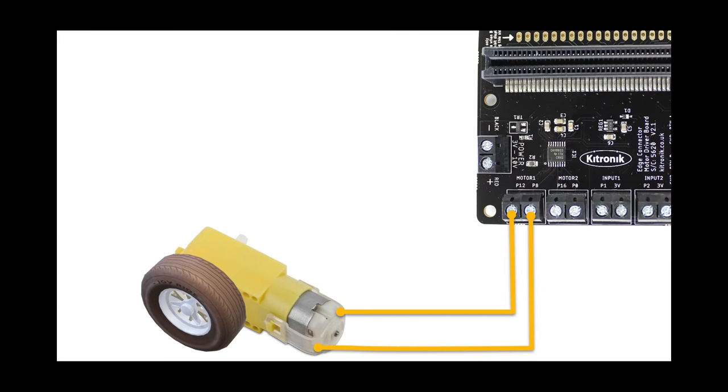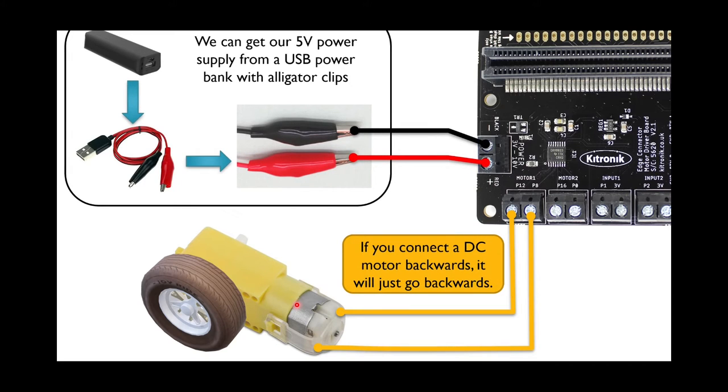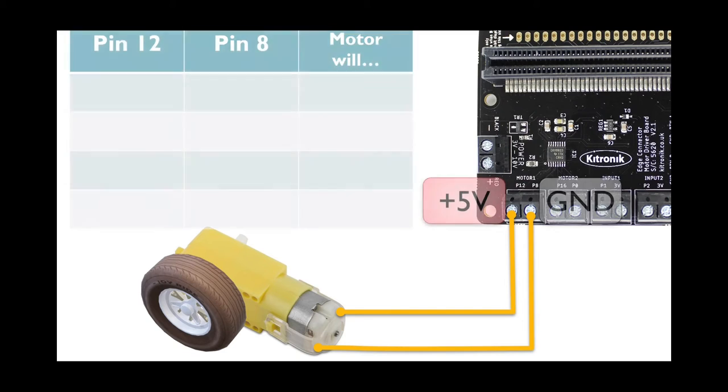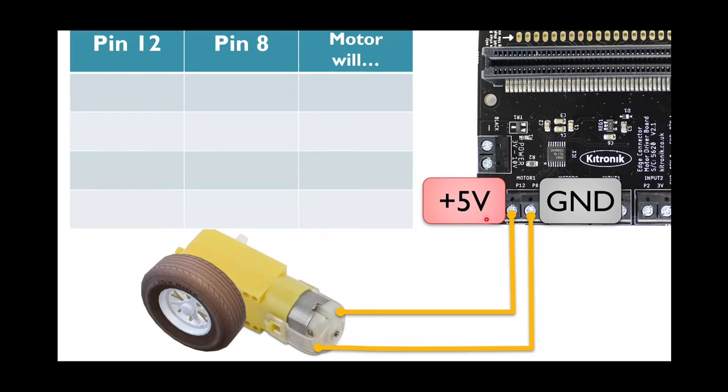Before we proceed, let's have a look at how this motor will work. Remember, if we plug it in backwards, it would just go backwards. Suppose that this pin 12 is set to positive 5 volts. In other words, we turn it on. And pin 8 is ground.